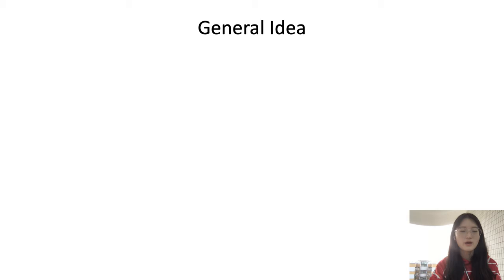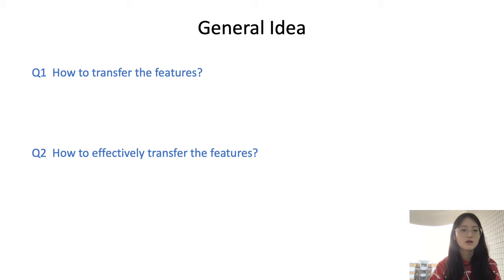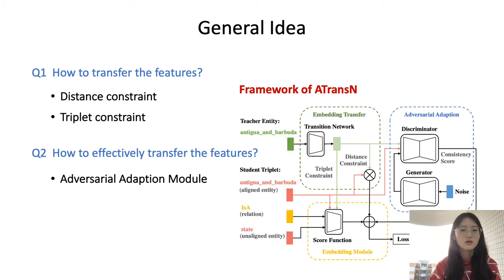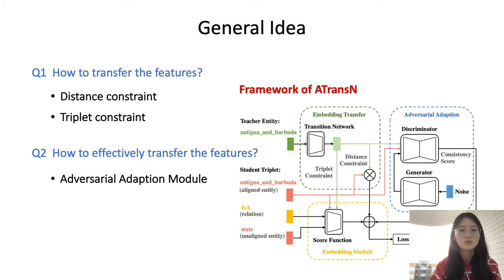During the transfer process, we have to answer two questions. The first is how to transfer the features, and the second is how to effectively transfer the features. For the first question, we propose two transfer methods. And for the second, we propose an adversarial adaptation model.